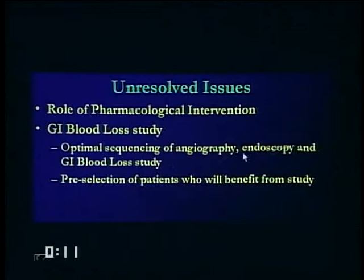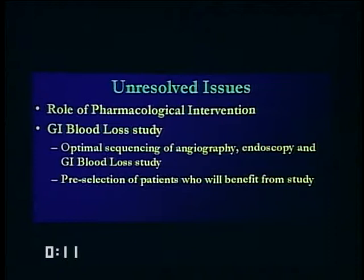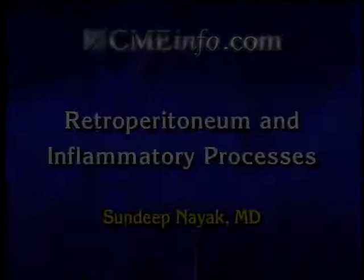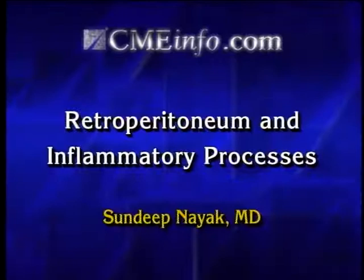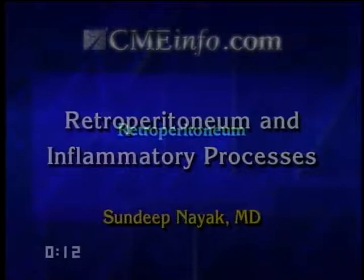We're not exactly sure when to do angiography, endoscopy, or the GI blood loss studies. Depending on who writes the paper, each one thinks they're superior to the other. The speed-of-bleeding studies are standardized for small farm animals, not for sick people in the ICU. Moving on to the retroperitoneum, a few areas where we can help: the kidney, the bladder, and scrotal perfusion. In the kidney, we can assess function, typically using serum chemistry. The obstructed kidney is best studied using a sonogram. For renal hypertension, use an MR angiogram.